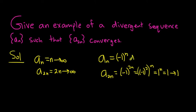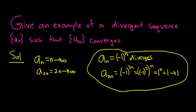However, this here diverges. So the answer to the question is simply this. The sequence we have is negative 1 to the n. It's a divergent sequence, and if you look at a sub 2n, it converges.